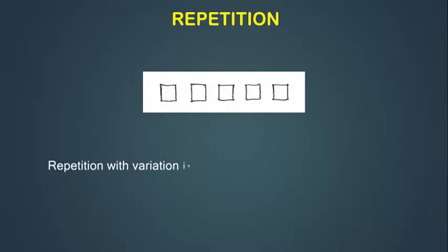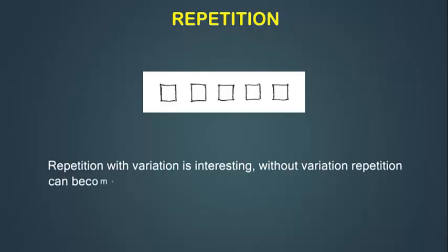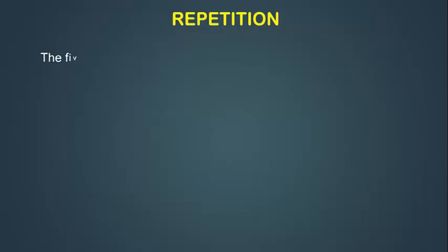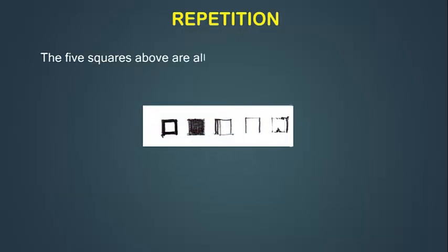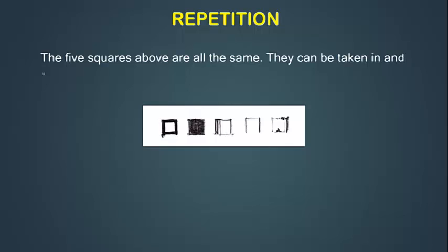Repetition with variation is interesting. Without variation, repetition can become monotonous. The five squares above are all the same. They can be taken in and understood with a single glance.